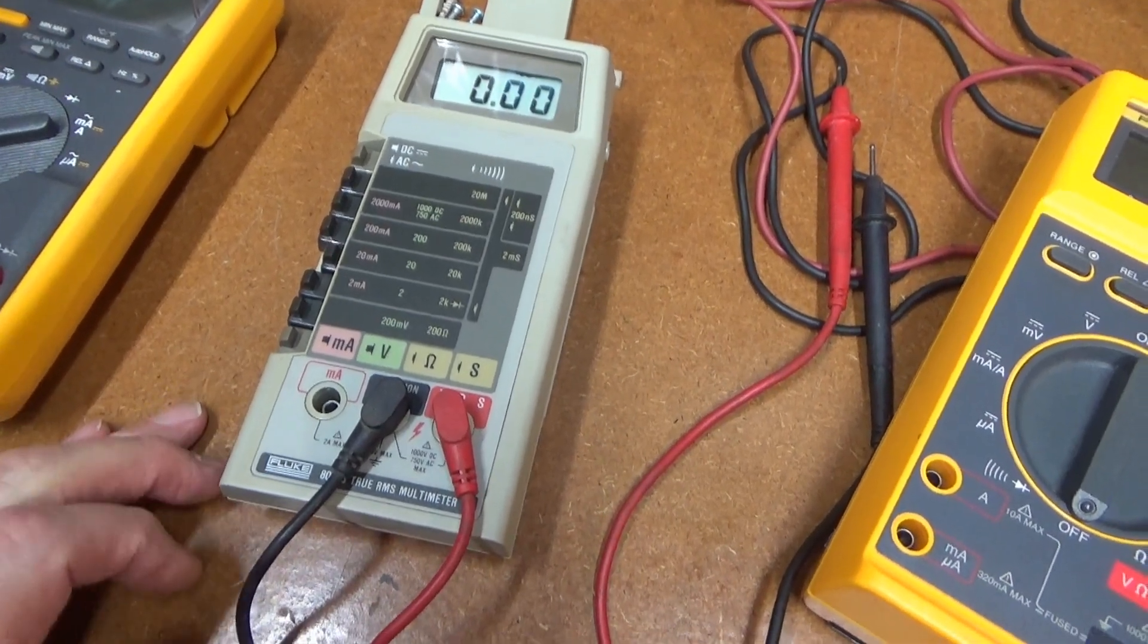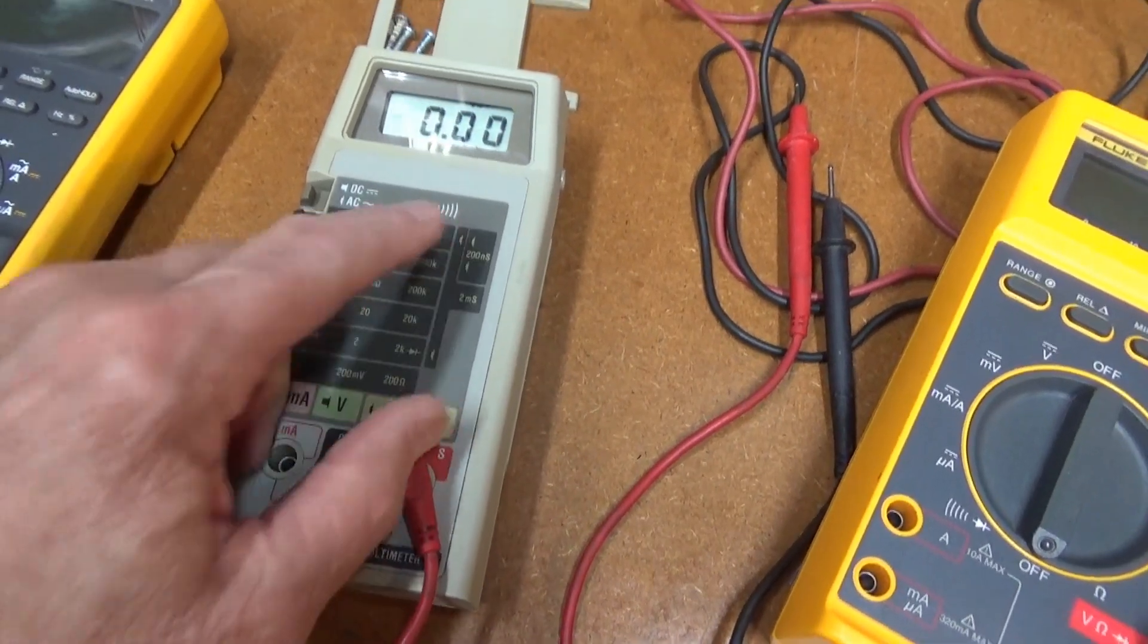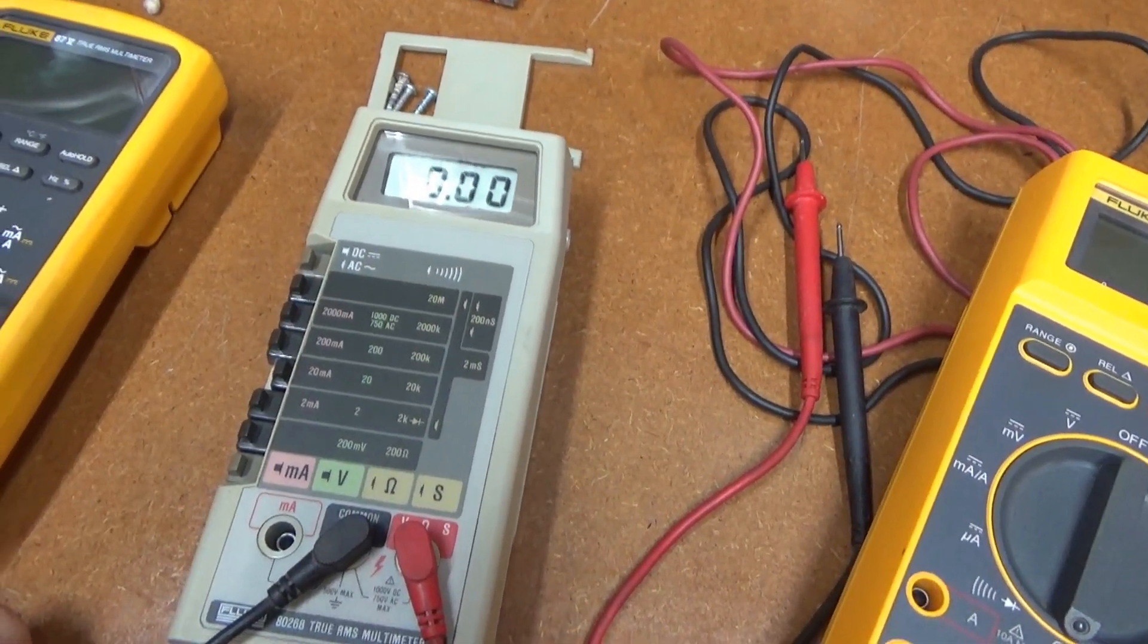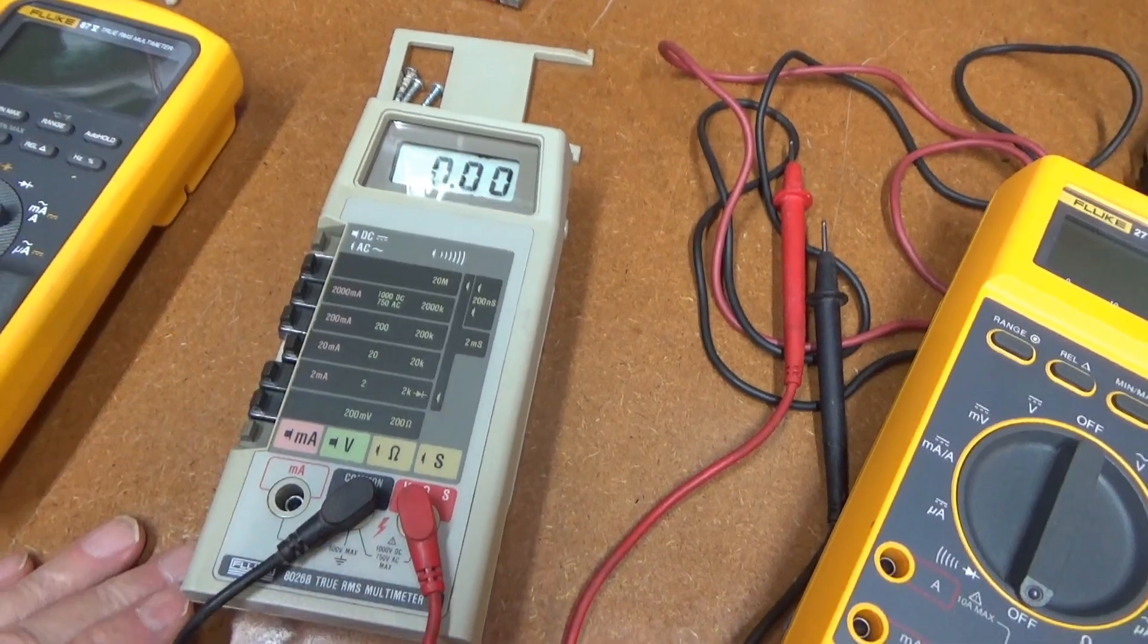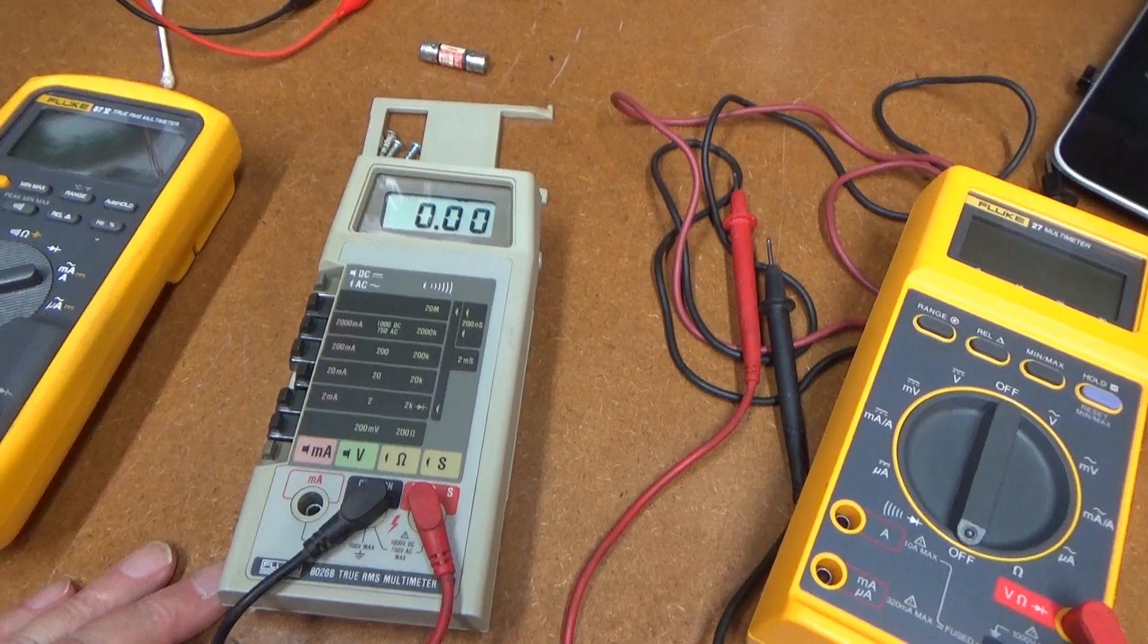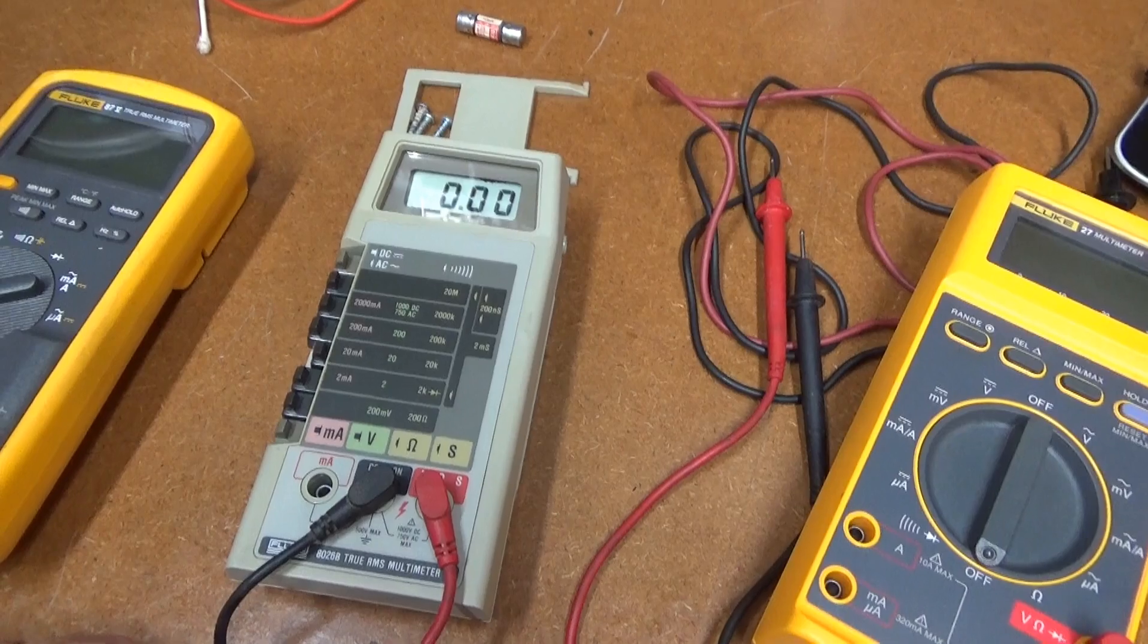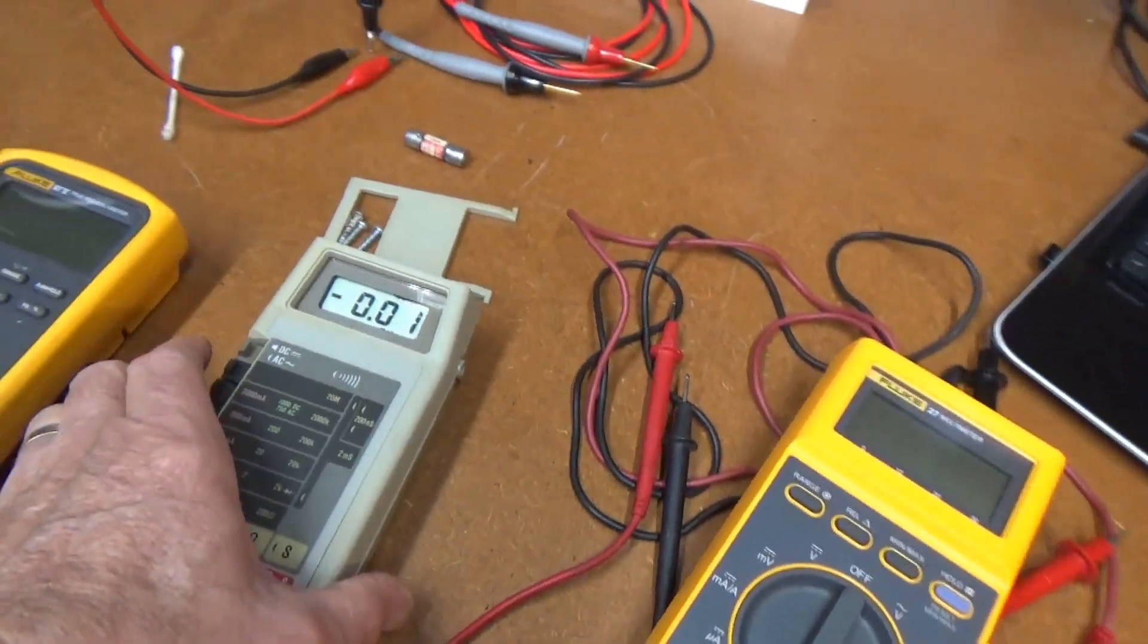But I am very impressed with this thing. The True RMS part is working very well. That continuity beeper is working great. Meter is very, very accurate. And I'm not even going to touch the calibration, it's all within spec. So there you go, for $30 with free shipping.